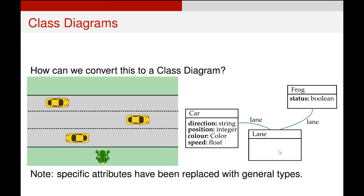In terms of attributes however, notice that the direction, position, color and speed of our car have gone from specific values to general types. So a class diagram will never have specific values attached to its attributes. What they will have are general descriptions of the types required by those attributes. The reason that we do this is it makes it far simpler to implement once we get into turning it into code.